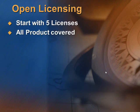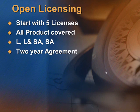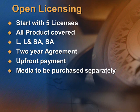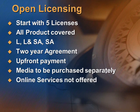Next, we come to Open Licensing, also commonly referred to as Paper License or MALP. To start a license, you need to buy at least 5 licenses, which can be a mix of products. All Microsoft products are covered under MALP. You can buy License (L), or License plus Software Assurance (L+SA), or only Software Assurance (SA). If you take License plus Software Assurance for the next 2 years, you get free upgrades besides a few other benefits. At the end of 2 years, you can just take SA and you will again be covered for the next 2 years.